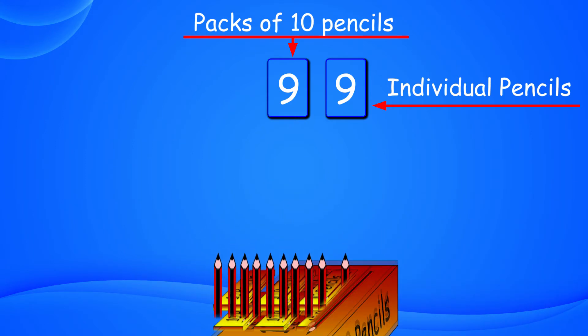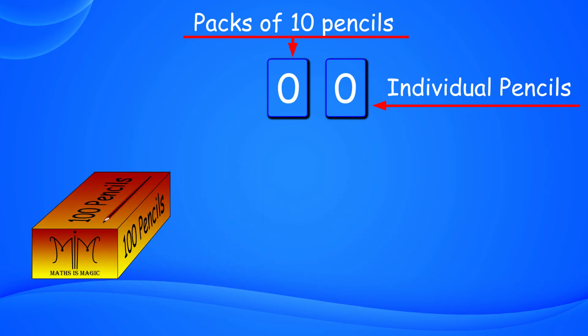Now we put all of them in a box. This box is containing 100 pencils. We create another box left to the previous number box, where we will write the digit showing the number of boxes of 100 pencils.